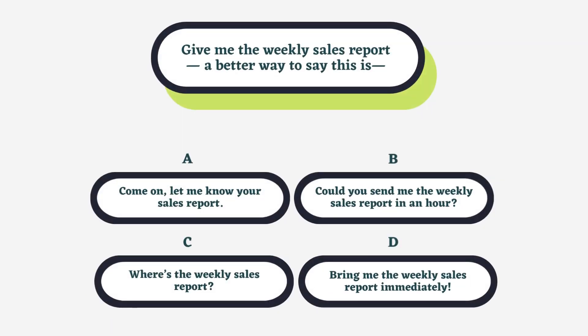Give me the weekly sales report. A better way to say this is: A. Come on, let me know your sales report, B. Could you send me the weekly sales report in an hour? C. Where's the weekly sales report? D. Bring me the weekly sales report immediately.